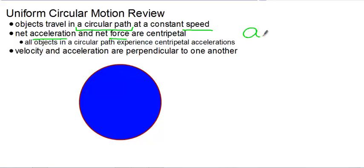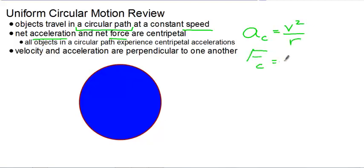Our centripetal acceleration equation is v squared over r. Our centripetal force equation is just the mass times the centripetal acceleration, or mv squared over r.